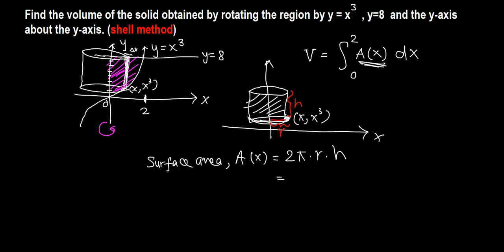This distance is x cubed, but that's a mistake. The total height is 8, and below this point that's x cubed. So this height will be the total height 8 minus the bottom part, which is x cubed. So 2 pi, radius is x, and height is 8 minus x cubed.